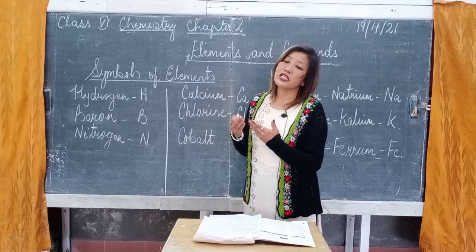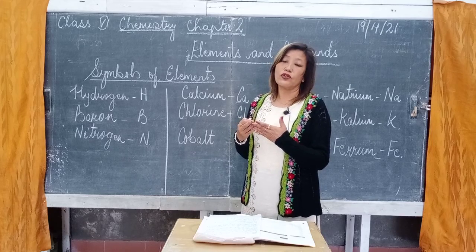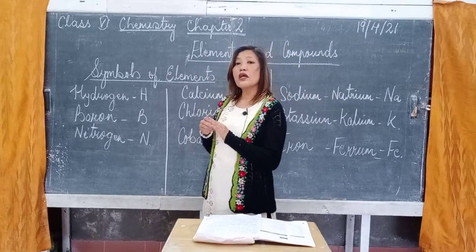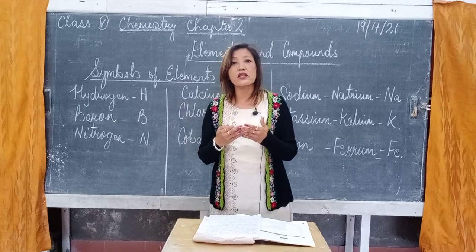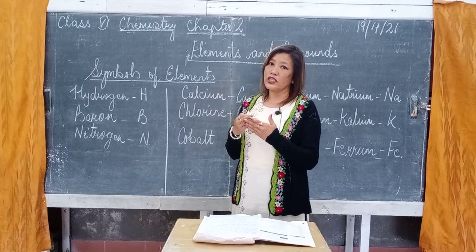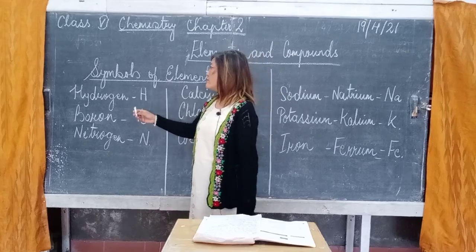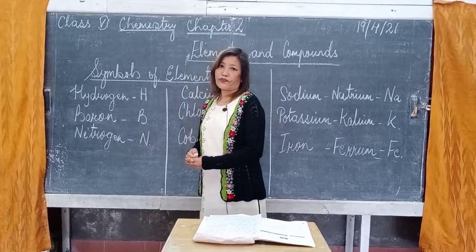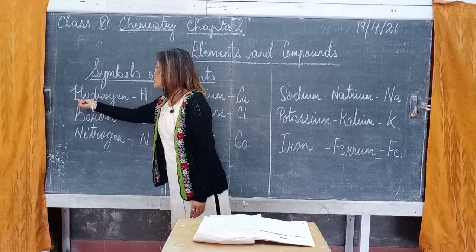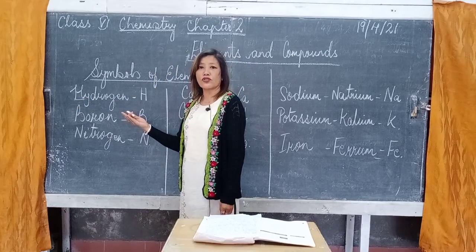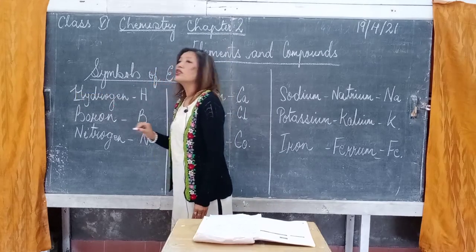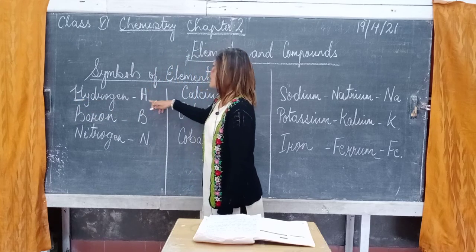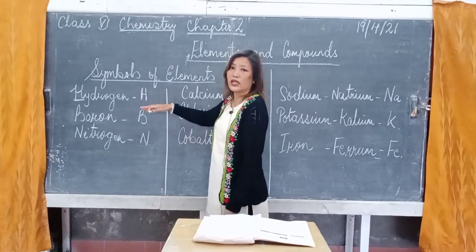When we write the symbols of elements there are some points you need to remember. In the first case, we take the first letter from the name of that element. For example, take hydrogen — H is the first letter. So when you write the symbol of hydrogen, you take the first letter H. By writing capital H, we know this is the symbol of the element hydrogen.